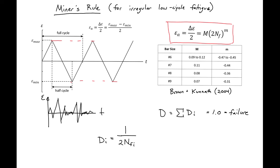And then we can rewrite our other expression. So 2 n sub f i is equal to epsilon sub a over m to the 1 over m power.